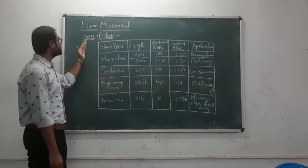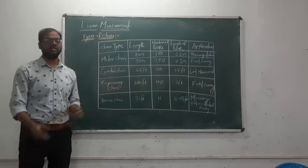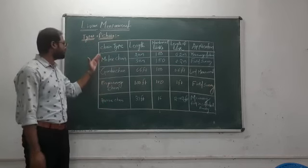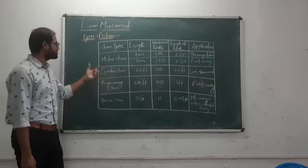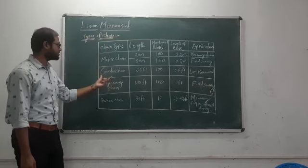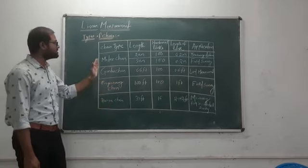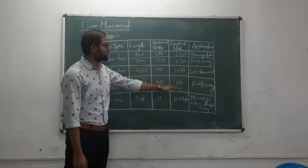Today we are going to discuss the types of chains, the instruments we use for linear measurement. We have four types of chains here: metric chain, Gunter's chain, engineer's chain, and revenue chain. We will see the applications of each chain in the measurement part.